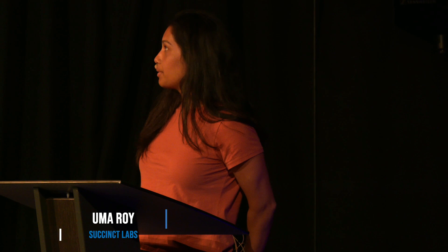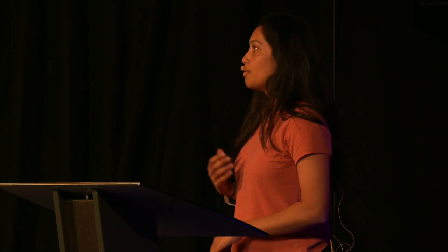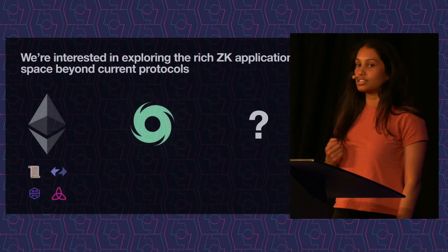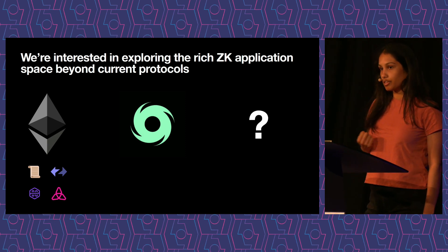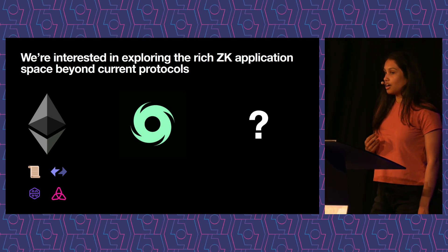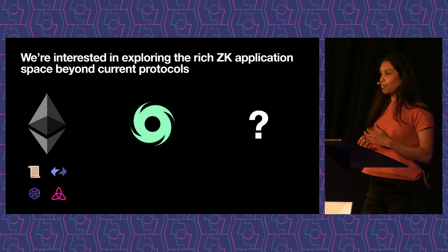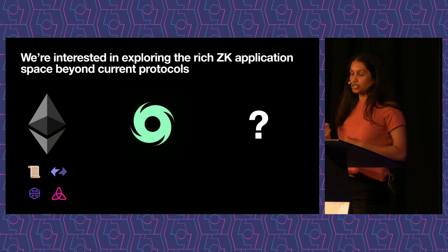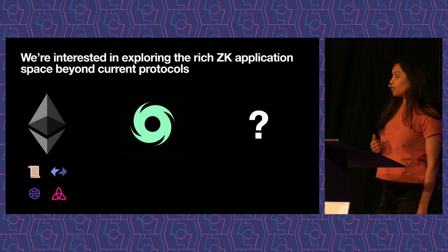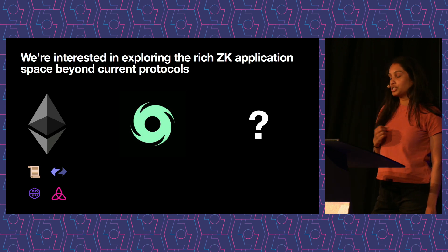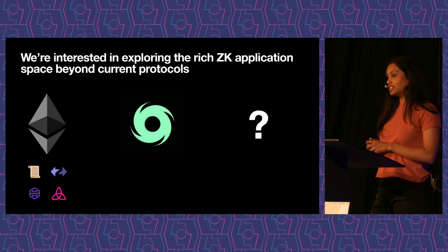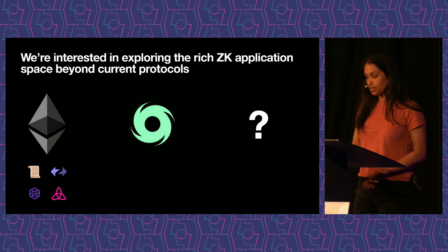Some background on Succinct: we're basically interested in exploring the rich ZK protocol design space beyond just the current two prominent flavors of ZK protocols, which are ZK EVMs and privacy-preserving protocols like Tornado Cash. We think ZK is a really powerful tool that has promised to scale blockchains and supercharge them in interesting ways. We're exploring whether there are other things you can do with ZK beyond ZK EVMs or things like Tornado Cash.